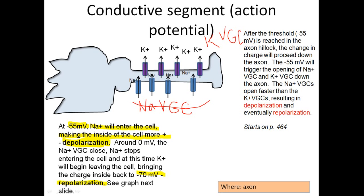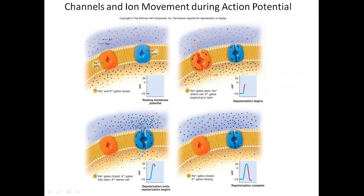The sodium and potassium voltage-gated channels open at the same time, but the sodium ones open really fast and let sodium in quickly, while the potassium ones are slower to open. This causes the charge inside the axon to rise toward zero, then potassium leaves and brings it back down to negative 70. That depolarization and repolarization occurring all along the axon is the action potential.